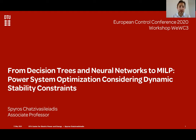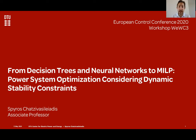Today we're going to talk about decision trees and neural networks and how we can capture with their help previously intractable constraints and convert them to a mixed integer linear program. We're going to apply that to power system optimization considering dynamic stability constraints.